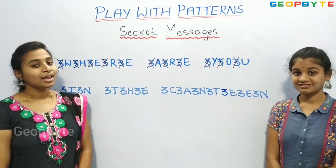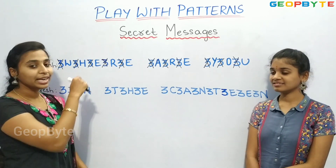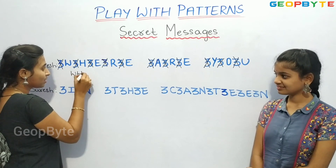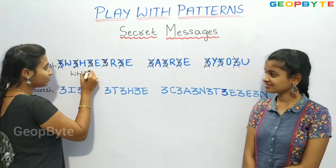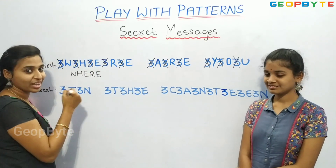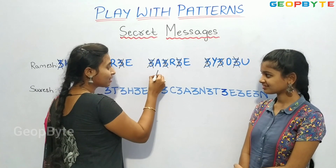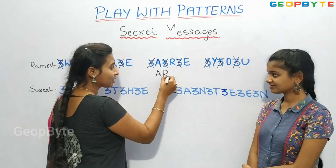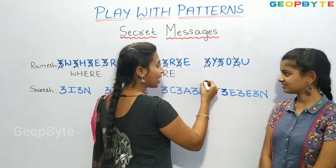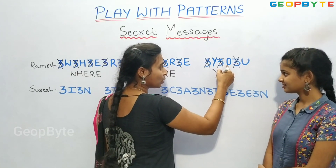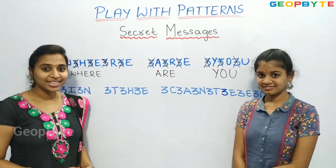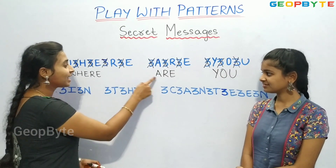Children, now let us write down the remaining alphabets: W, H, E, R, E, A, R, E, W, H, E, R, E, Y, O, U — 'Where are you?' Ramesh asked Suresh: Where are you?